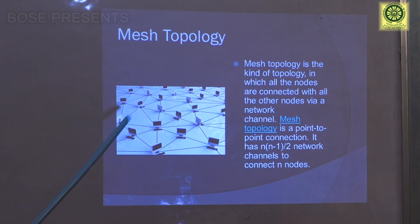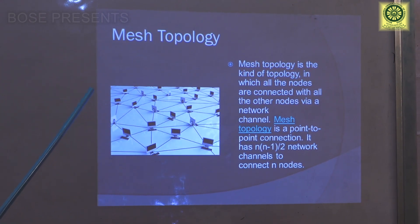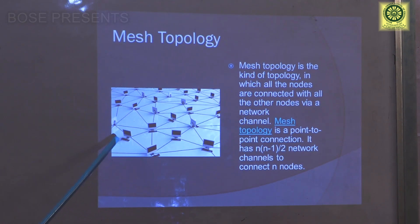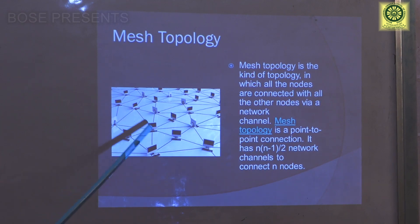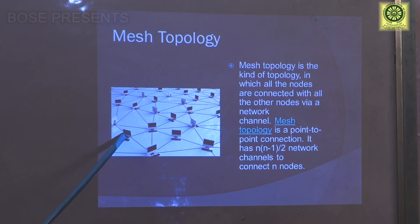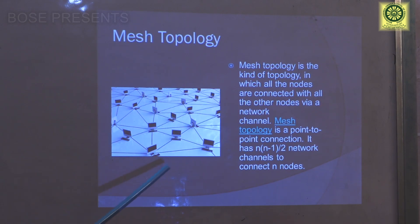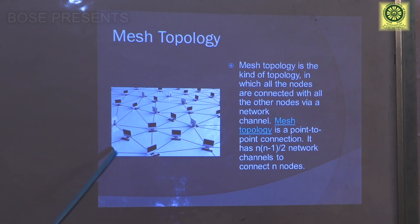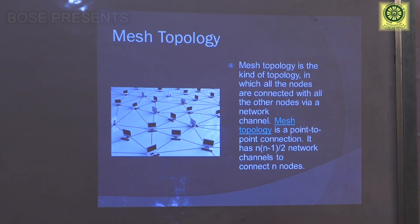Coming to mesh topology. In mesh topology, this type of configuration occurs in a network when every node of computer is connected to each and every other node in that network. Mesh topology is a kind of topology in which all nodes are connected with every other node. The number of connections can be calculated as one node can connect with N multiplied by N minus 1 channels in that particular network.